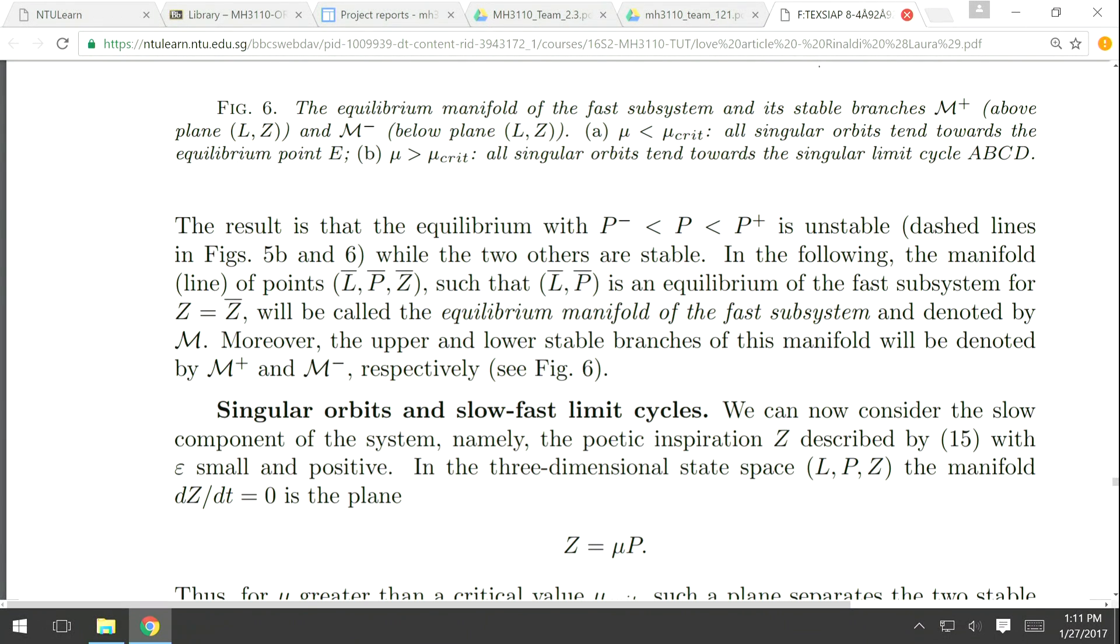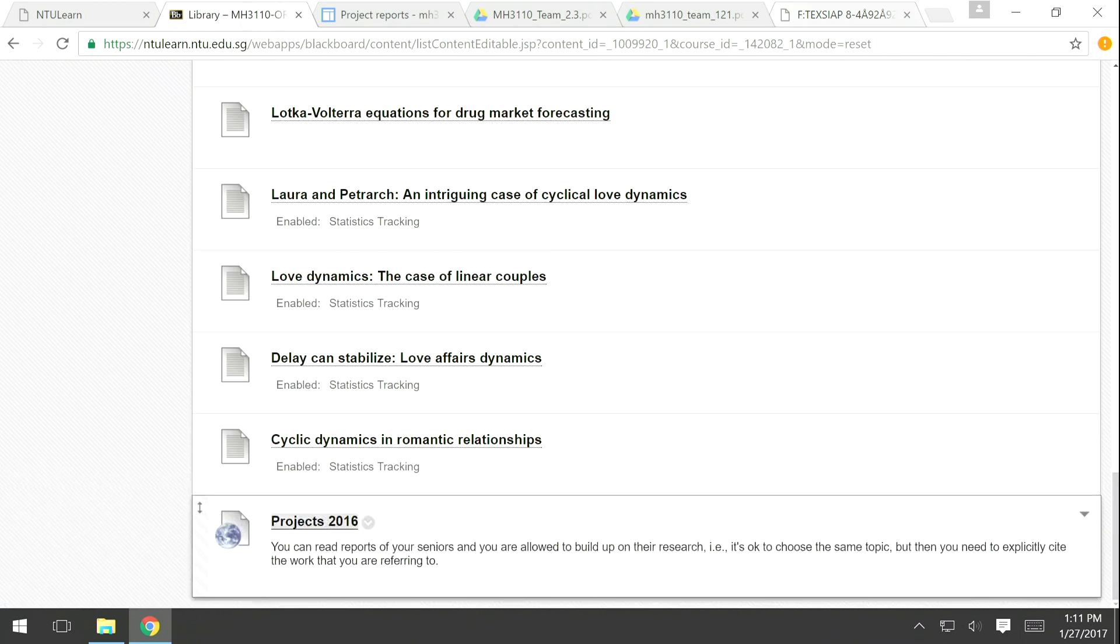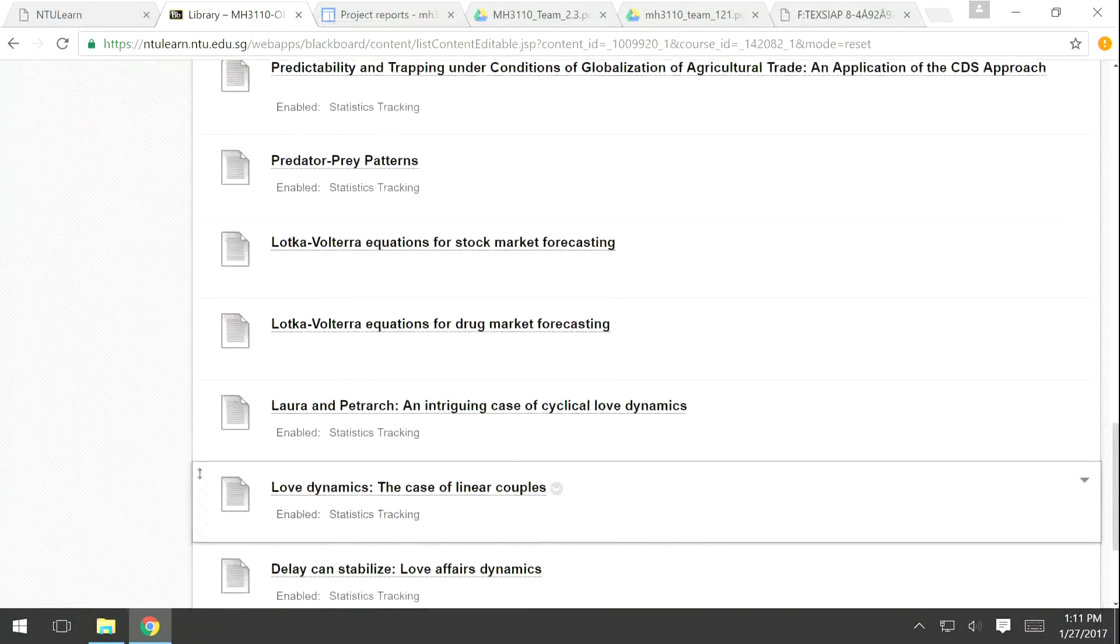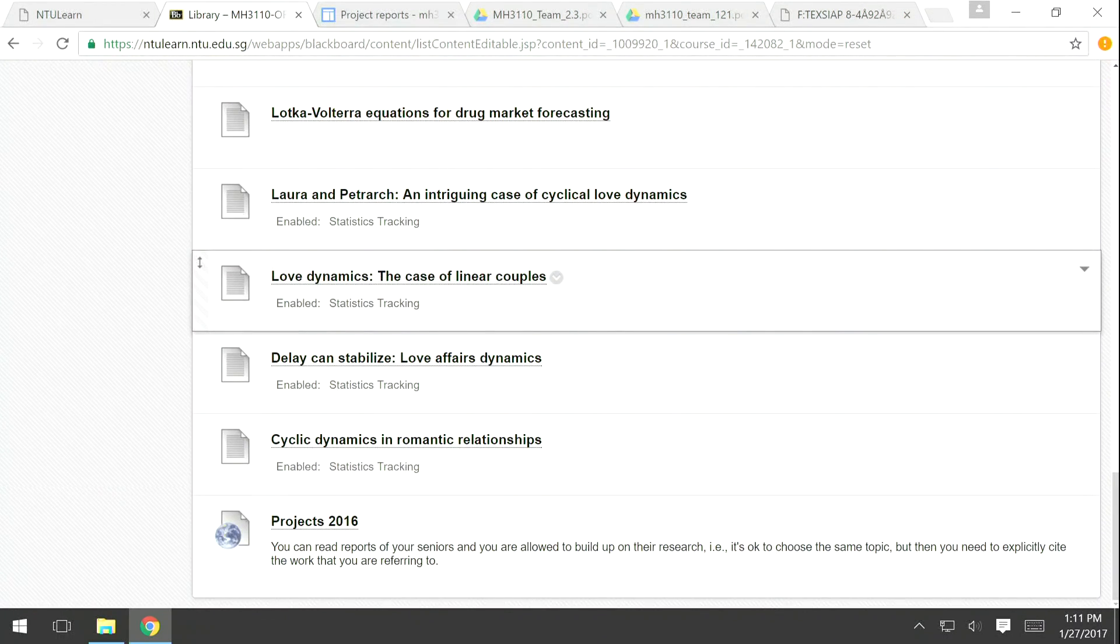If instead you invent something completely different—if you go to the library and look at these research papers and then maybe come up with a completely different topic that you never saw in last year's projects, and if you are able to find the data set that you can do the project on, then you'll get a higher grade for the report.